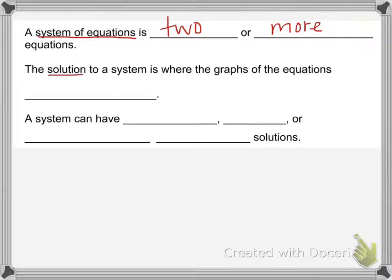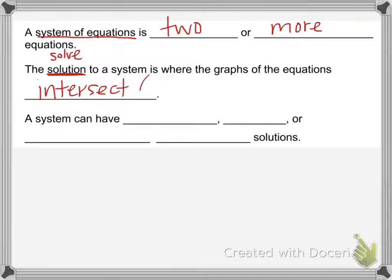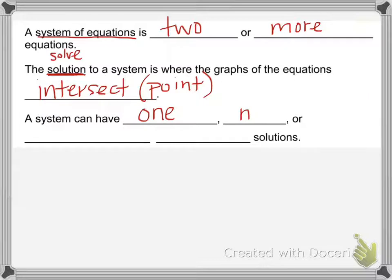The solution to a system — so if you're asked to solve, you're finding the solution — is where the graphs of the two equations intersect, and so this will be a point. Most systems of equations will intersect at a point and you will have one solution, but sometimes you will have no solutions, or you might have infinitely many solutions.